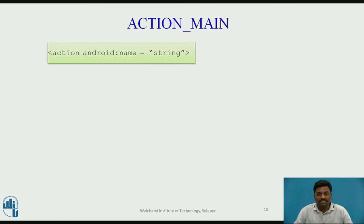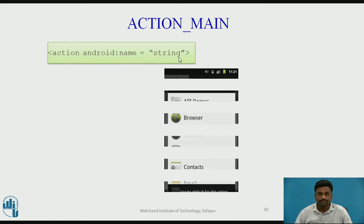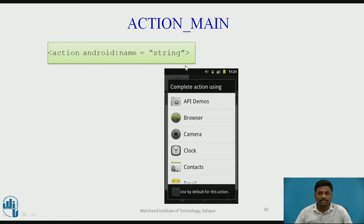ACTION_MAIN: here we give the name of the action in the XML file. We write android:name equal to a string and put the action there. When we write this in the XML file — make a note of it — the complete action string will be loaded. Intents are nothing but changing pages or sending some messages.